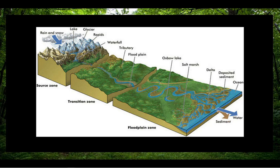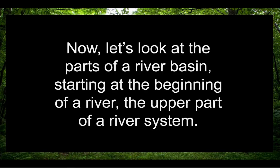Typically, scientists think about a river basin as being split into three distinct parts: an upper part, a middle part, and a lower part. Now let's look at the parts of a river basin starting at the beginning of a river — the upper part of a river system.